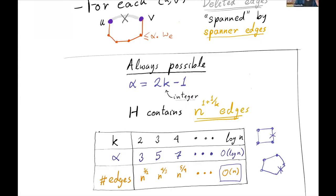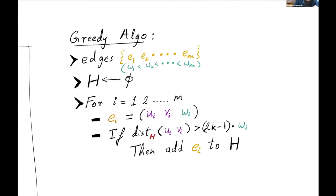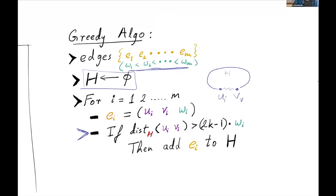Now I'll present a simple greedy algorithm to construct a spanner of stretch 2k minus 1. You start by sorting all the weights in increasing order. You start with an empty graph H, and one by one, for every edge in increasing order of weight, you check whether there already exists a path which makes adding the edge redundant. If adding the edge is redundant, you don't add it. If it is necessary because the existing path is too long, you add the edge. This is the greedy sequential algorithm.